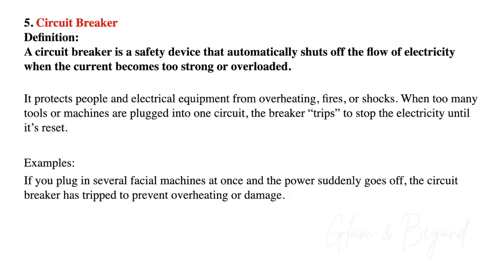Number five, circuit breaker. A circuit breaker is a safety device that automatically shuts off the flow of electricity when the current becomes too strong or overloaded. It protects people and electrical equipment from overheating, fires, or shocks. When too many tools or facial machines are plugged into one circuit, the breaker trips to stop the electricity until it's reset. For example, if you plug in several facial machines at once and the power suddenly goes off, the circuit breaker has tripped to prevent overheating or damage.